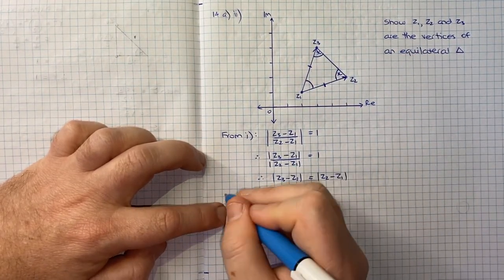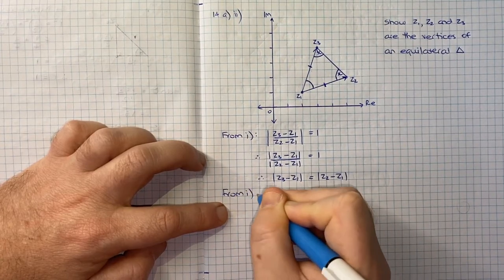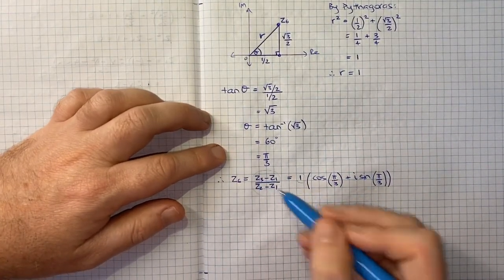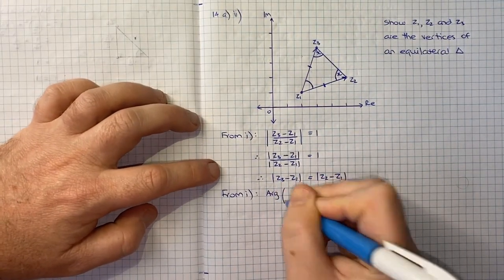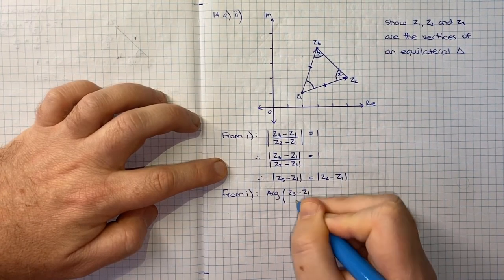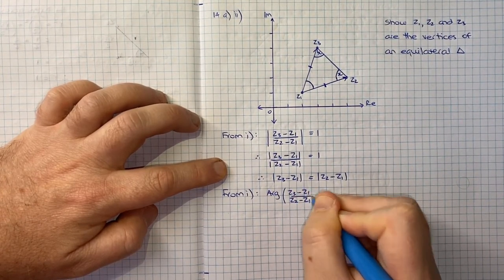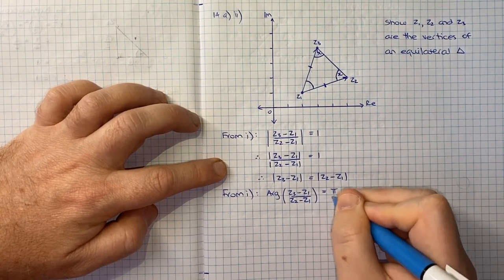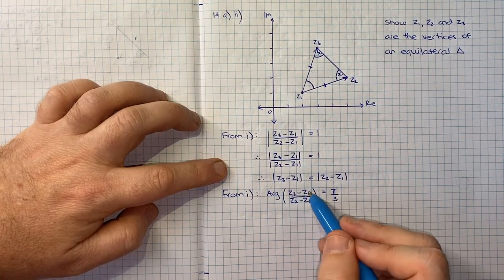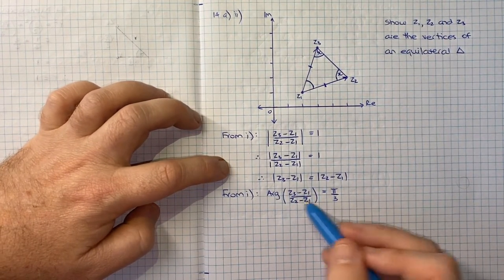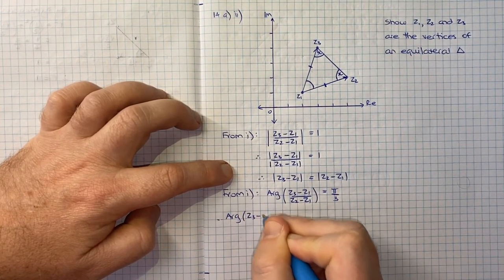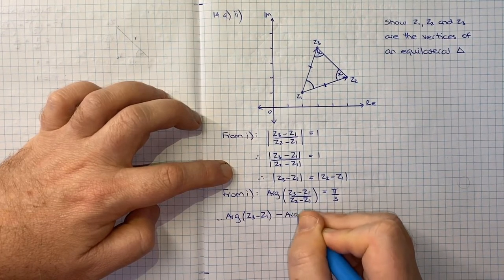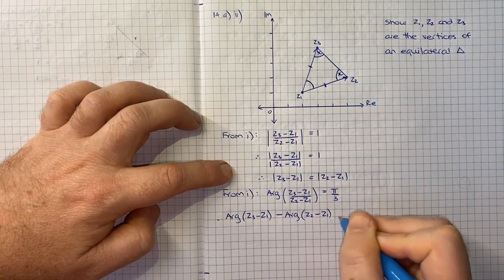All right, now the other result from part one that I think is helpful is that the argument of this complex number is π on 3. And so we can say that the argument of Z3 minus Z1 on Z2 minus Z1, that's equal to π on 3. And then we can use our rule that the argument of one complex number divided by another is the difference of them. So therefore, we can say the argument of Z3 minus Z1 minus the argument of Z2 minus Z1, that's equal to π on 3.